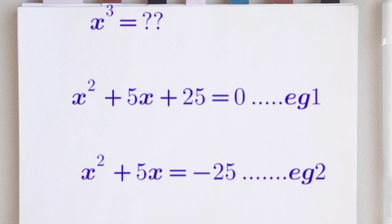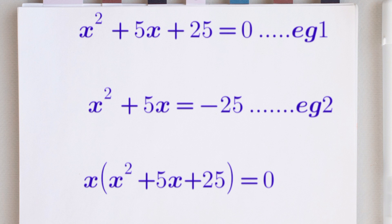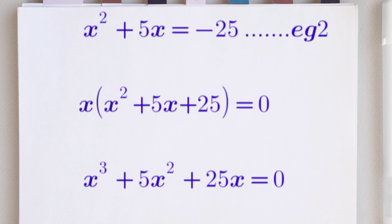Now, going back to our equation 1, we are going to multiply through by x. This is going to give us x times the bracket x raised to the power of 2 plus 5x plus 25 equals to 0. So x multiplied by x squared gives us x cubed, then x multiplied by 5x gives us 5x squared, then plus x multiplied by 25 gives us 25x, all equals to 0.